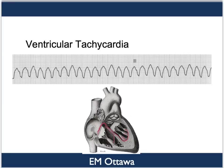Next, we will talk about wide complex tachycardia. These are rhythms generated from the ventricles. The first is ventricular tachycardia, or VTac. Since it comes from the ventricles, the QRS complexes are wide. They will be regular. And since it does not come from the SA node, there will be no P waves.